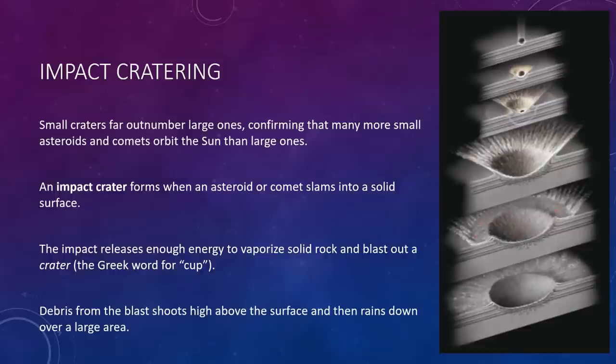First, we had impact cratering. The scarred faces of the Moon and Mercury attest to the battering that the terrestrial worlds have taken from leftover planetesimals such as comets and asteroids. They also immediately reveal an important feature of impact craters. Small craters far outnumber large ones, confirming that many more small asteroids and comets orbiting the Sun than large ones. While the Moon and Mercury bear the most obvious scars, all of the terrestrial worlds have suffered similar impacts.